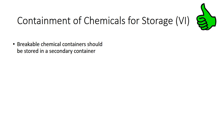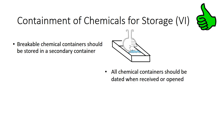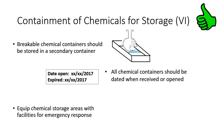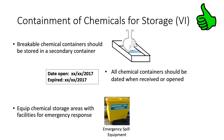Breakable chemical containers should be stored in a secondary container to ensure that if a chemical leakage occurs, it is contained. All chemical containers should be dated when received or opened. This enables easy identification of older chemicals, so they are used first and tracked for disposal. Equip chemical storage areas with facilities for emergency response and ensure the area is well ventilated. Firefighting, spill control, bodily contamination, and first aid equipment should be strategically placed to enable appropriate response in an emergency.